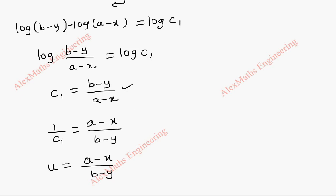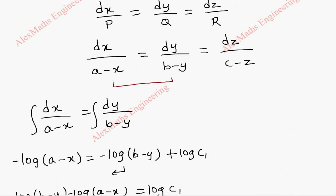Even if I take the other form, nothing wrong. In the same way, we take another pair and continue integration, that is dy by B minus Y equal to dz by C minus Z. This is again in variable separable form, so we integrate both sides.